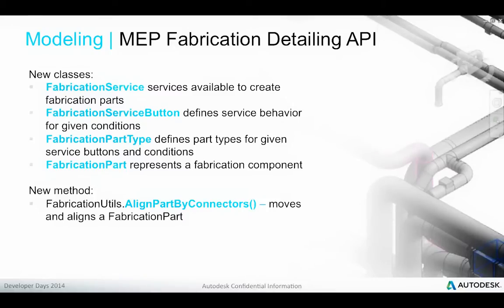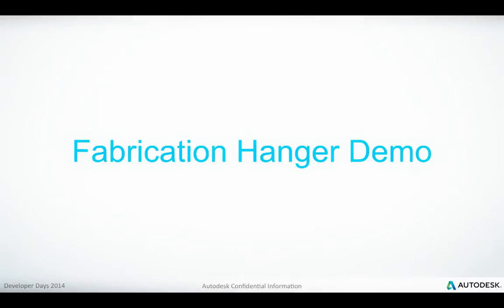The MEP fabrication detailing comes with a complete API so this user interaction can also be driven programmatically. New classes are provided: a fabrication service which includes support for fabrication service buttons defining service behavior for given conditions, the fabrication part types representing the types for service buttons and conditions, and fabrication parts representing the components being manipulated. Let's look at a quick demonstration of this functionality.